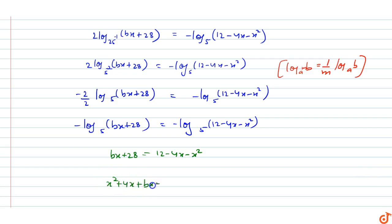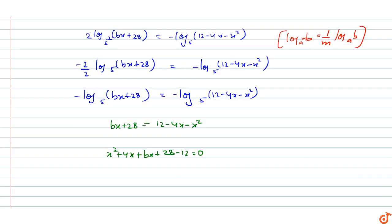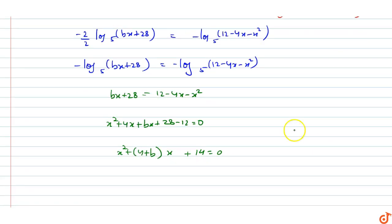This simplifies to x squared + (4 + B)x + 16 equals 0, which is in the standard quadratic form ax squared + bx + c equals 0, where a = 1, b = (4 + B), and c = 16.